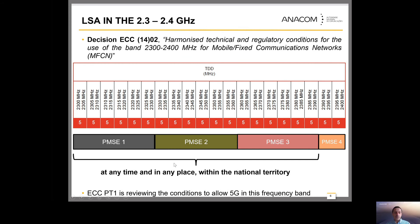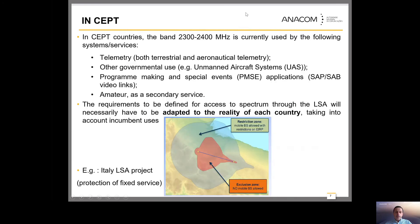Just a few notes: at this moment, ECC PT1 is reviewing the conditions of Decision 1402 to include 5G. LSA has been studied in Europe regarding conditions for spectrum use — what services should be protected and how spectrum can be shared. The use of the 2.3–2.4 GHz band is not harmonized across Europe. Some countries have telemetry, some have governmental use, some have PMSE with local or specific licenses where the administration knows where the applications and video links are being used.